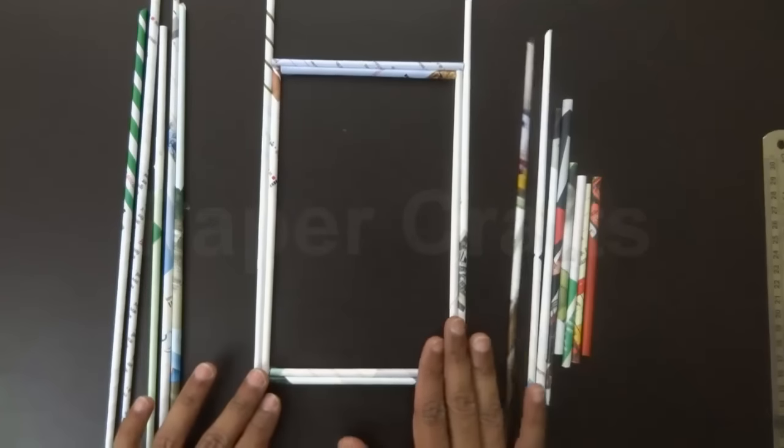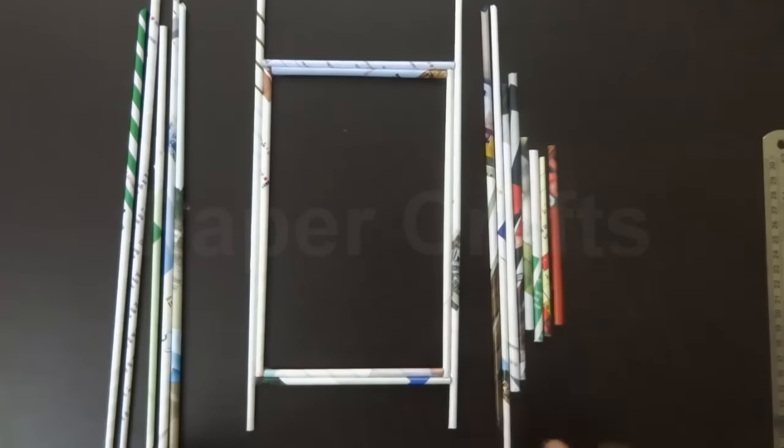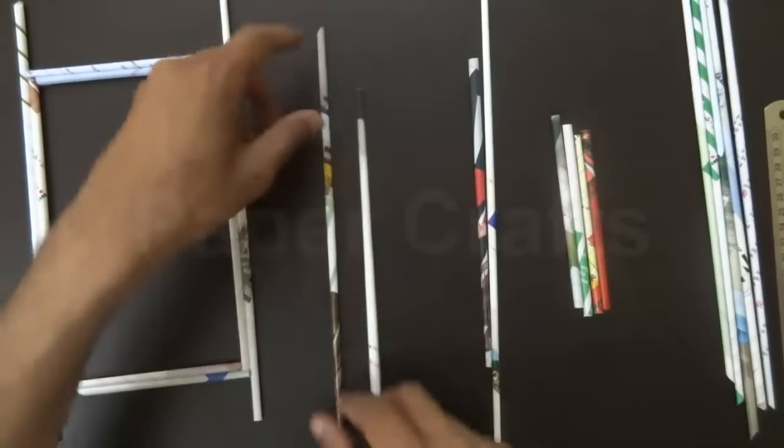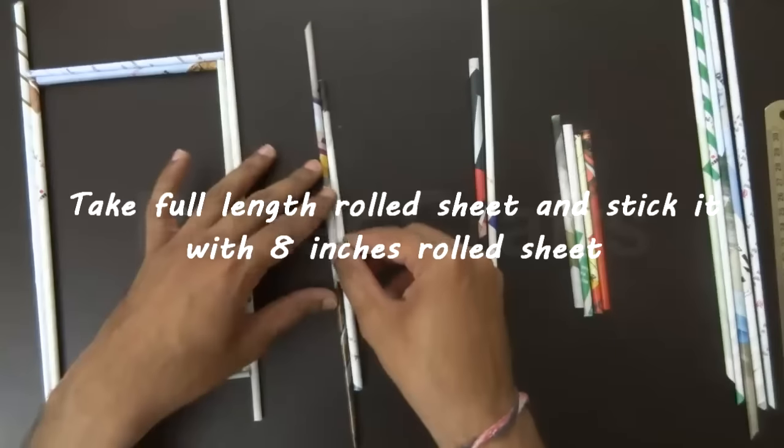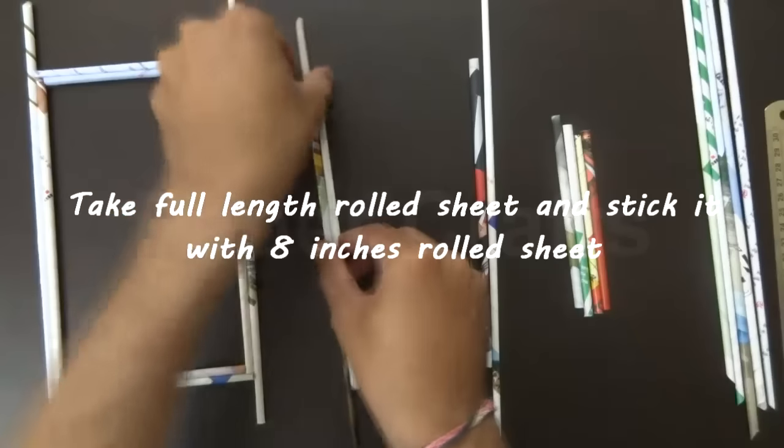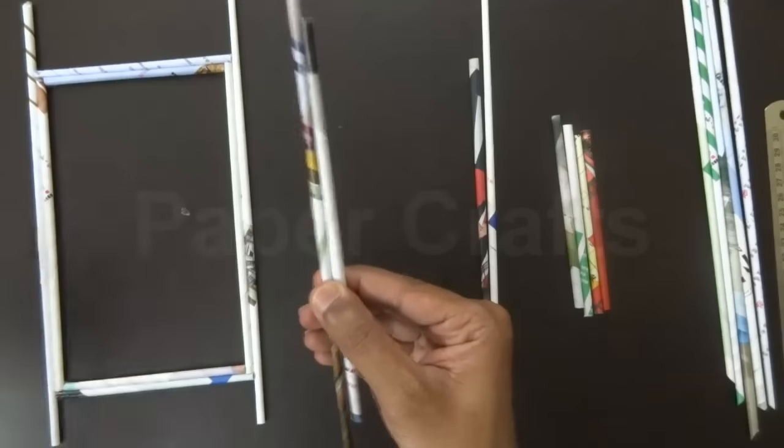Now let us make this shape. Take one full length stick and one stick that we have cut around 8 inches. Stick both of these together. I am using cellotape to stick them.